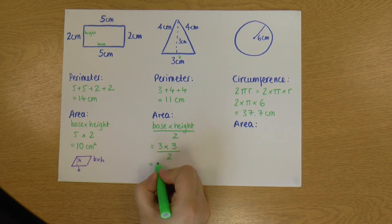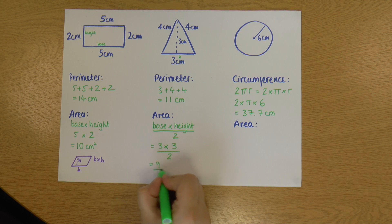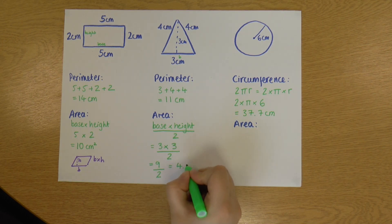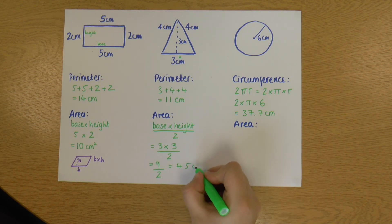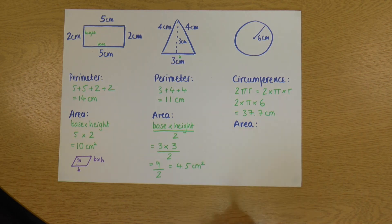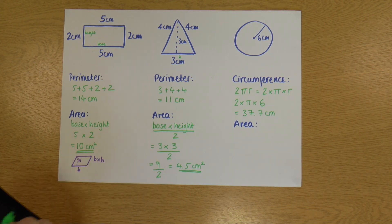And then divide by two. So 3 times 3 is 9, divided by 2 is 4.5. And again, because it's an area, my units are unit squared, so it's centimeter squared. I'm going to underline this one too. There we go.